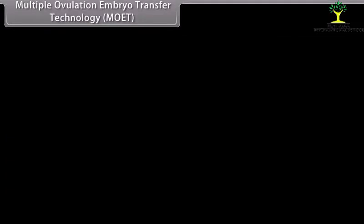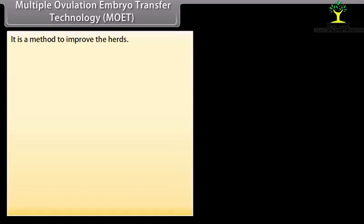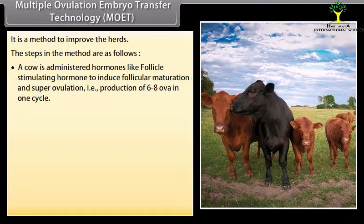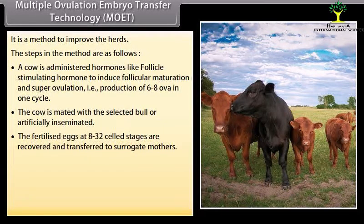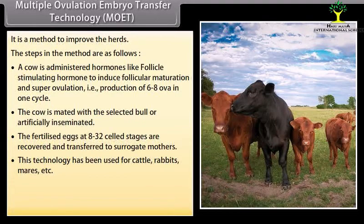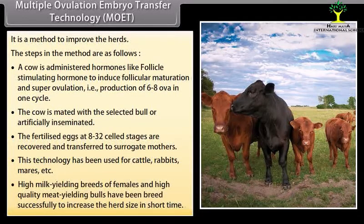Multiple Ovulation Embryo Transfer (MOET) technology is a method to improve herds. A cow is administered hormones like follicle-stimulating hormone to induce follicular maturation and super ovulation, producing 6 to 8 ova in one cycle. The cow is mated with a selected bull or artificially inseminated. Fertilized eggs at the 8 to 32 celled stage are recovered and transferred to surrogate mothers. This technology has been used for cattle, rabbits, mares, etc. High milk-yielding females and high-quality meat-yielding bulls have been bred successfully to increase herd size in the short term.